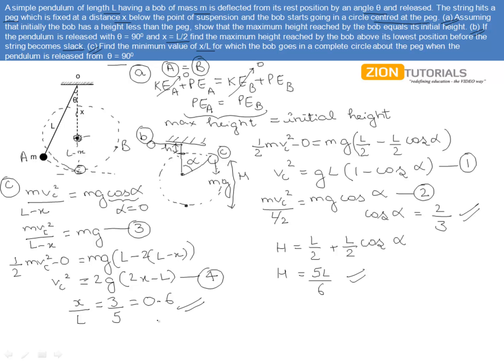So x/L should be at least 0.6 for the bob to complete the whole circle. Thank you.